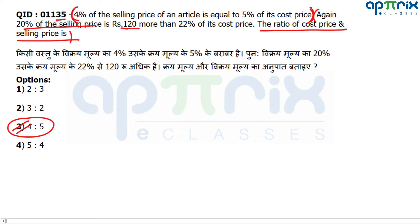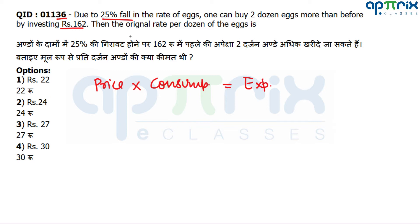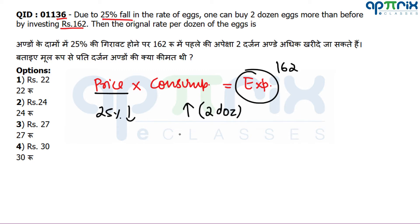Based on the first statement only you can mark the answer. No further research needed. Question number 36: Due to 25% fall in the rate of eggs, one can buy two dozen more eggs than before by investing rupees 162. Find the original rate per dozen. This is a standard question. You have a fixed expenditure (162 rupees), and when price decreases, consumption increases.